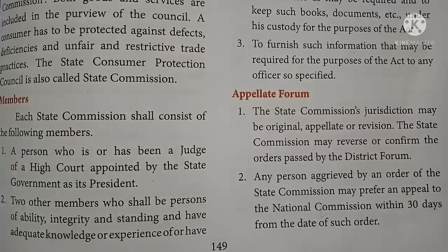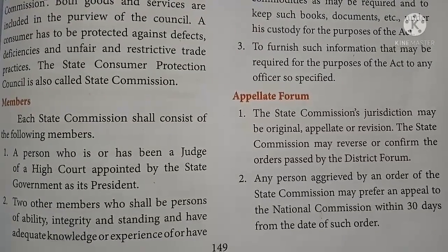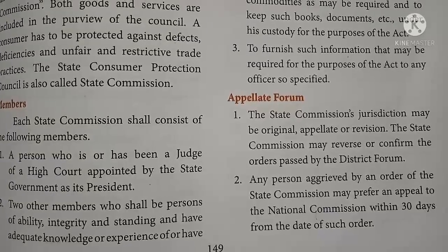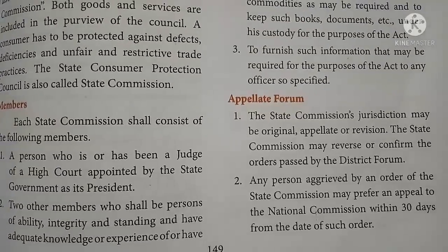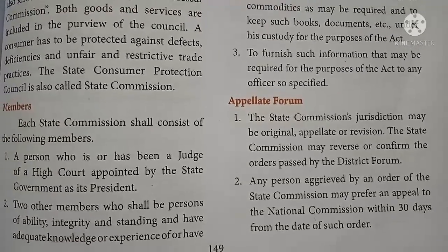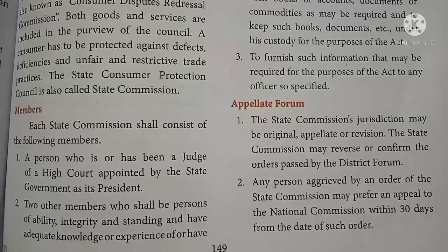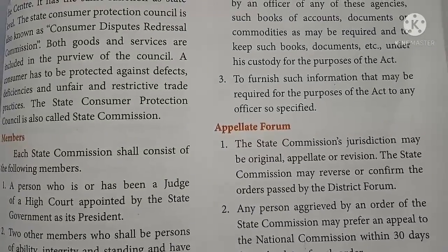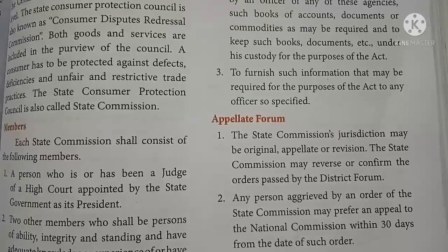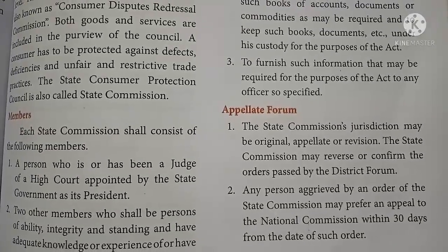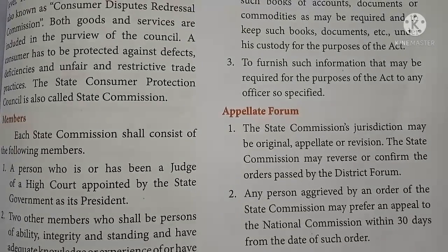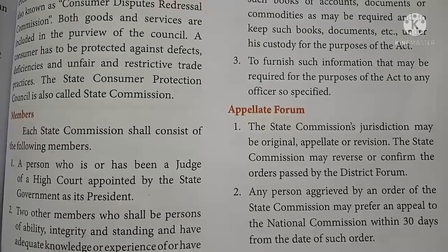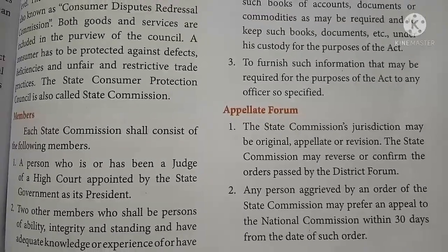Any person aggrieved by an order of the state commission may prefer an appeal to the national commission within 30 days from the date of such order. If a person is dissatisfied with the order given by the state commission, they can make an appeal at the national level within 30 days.